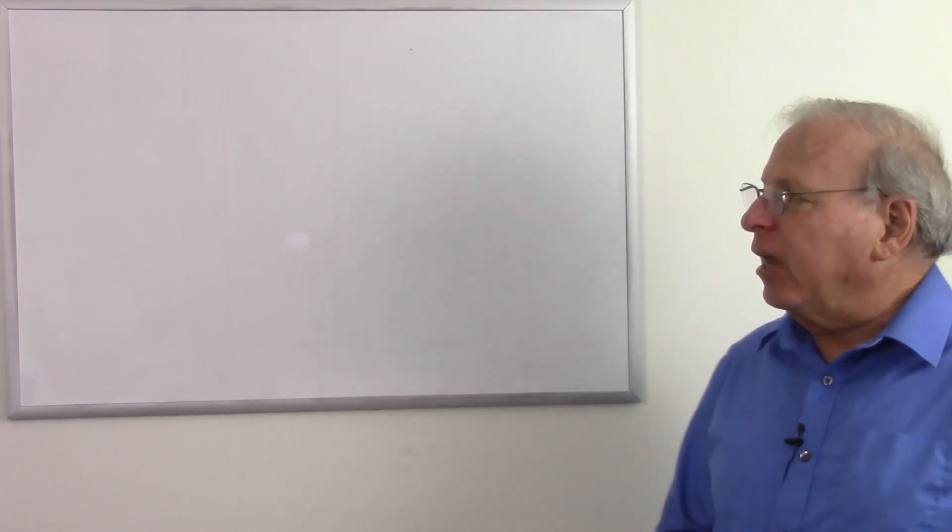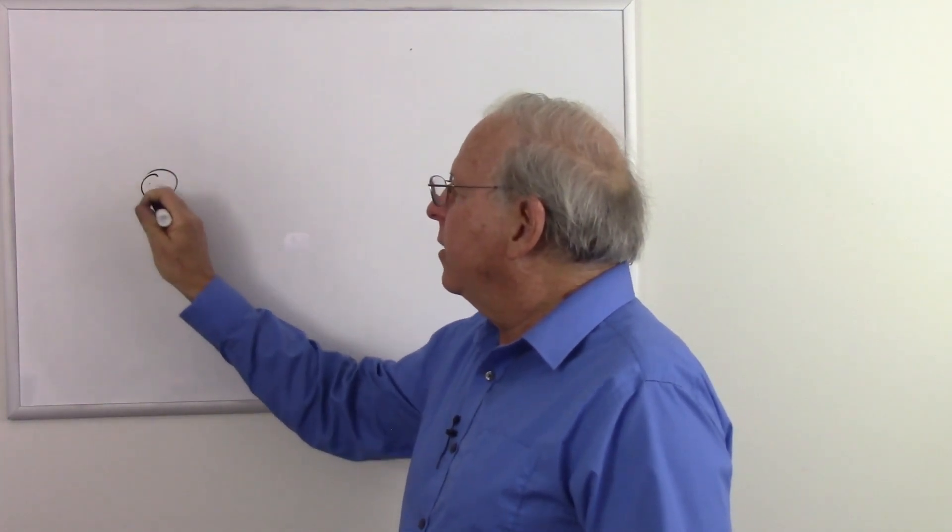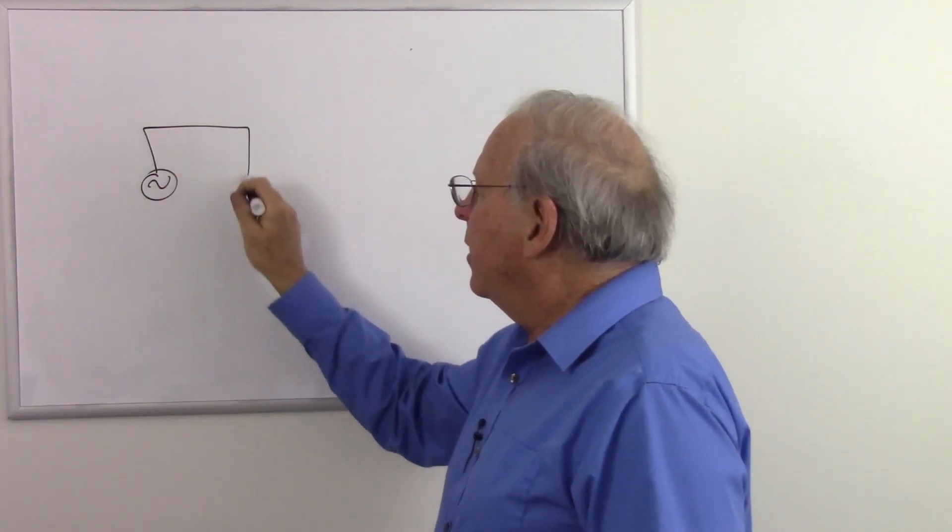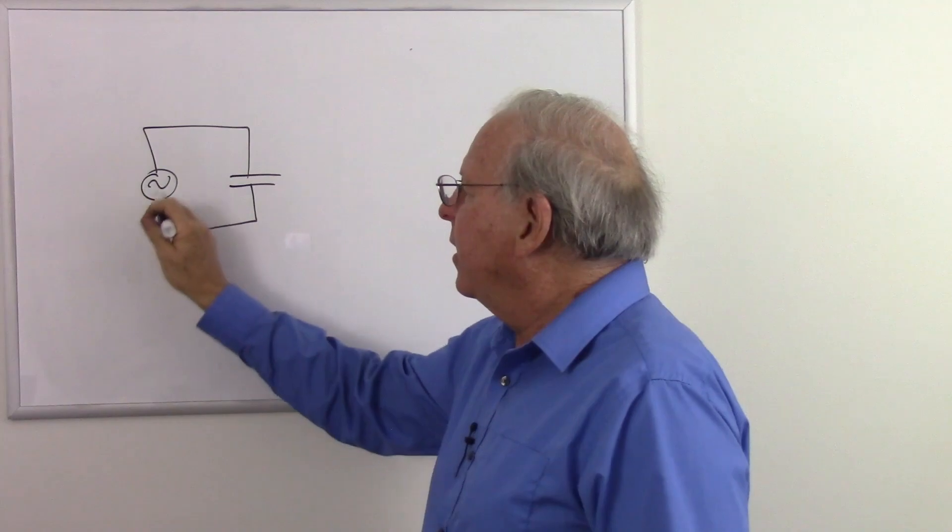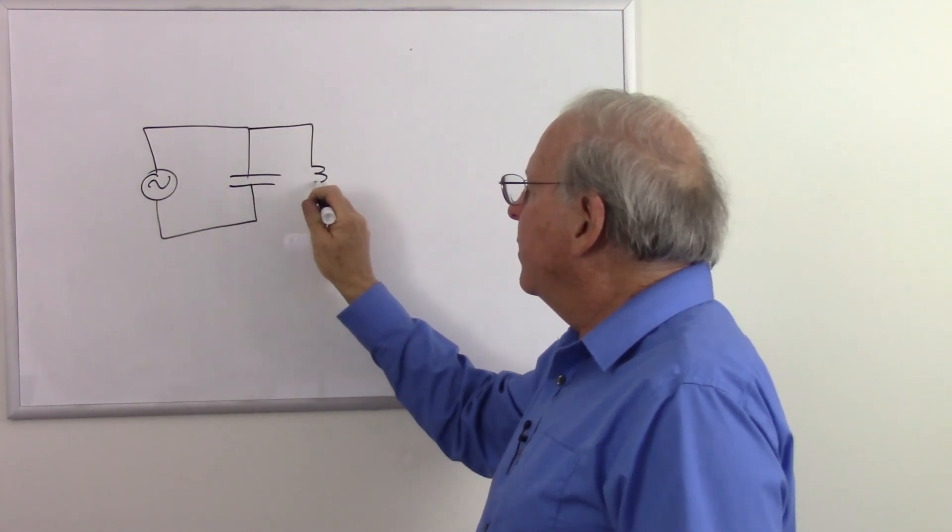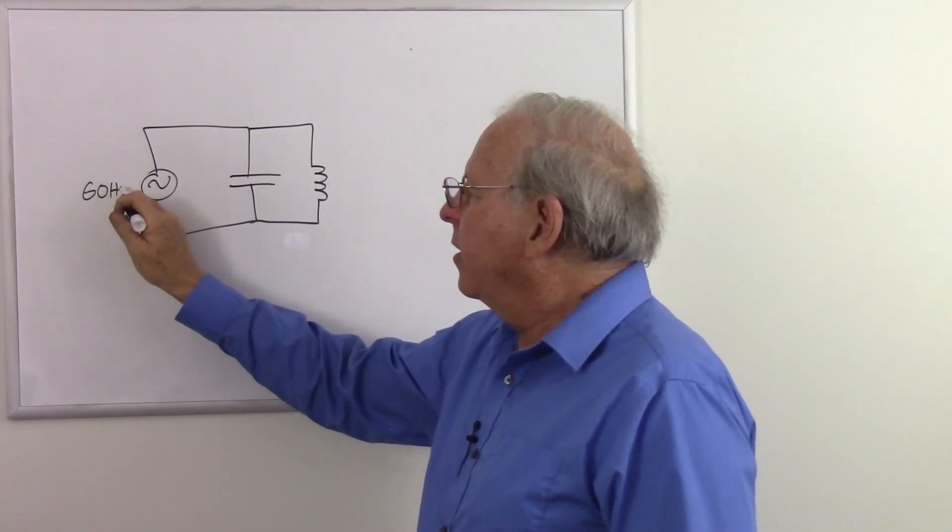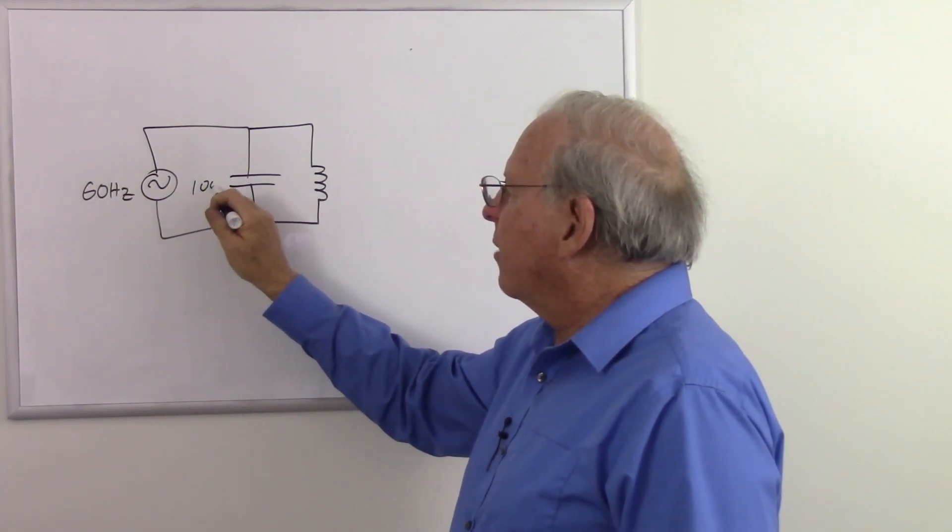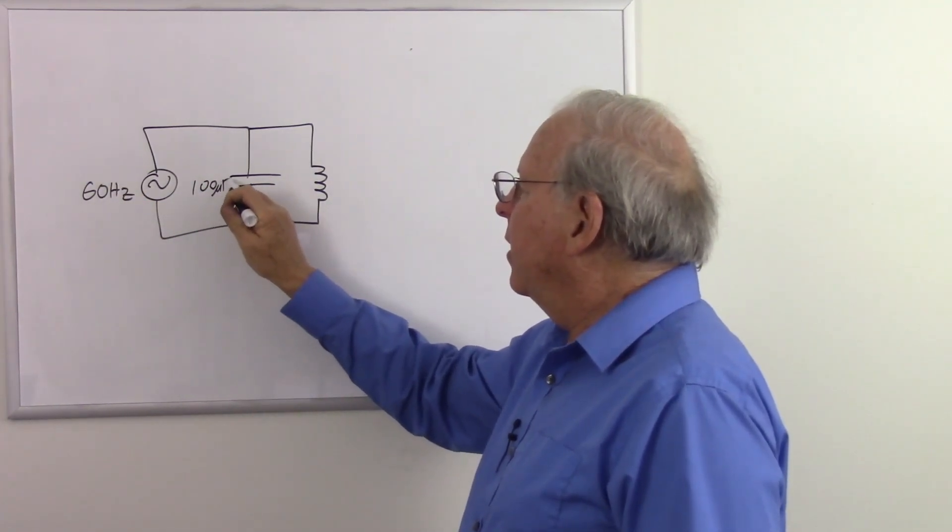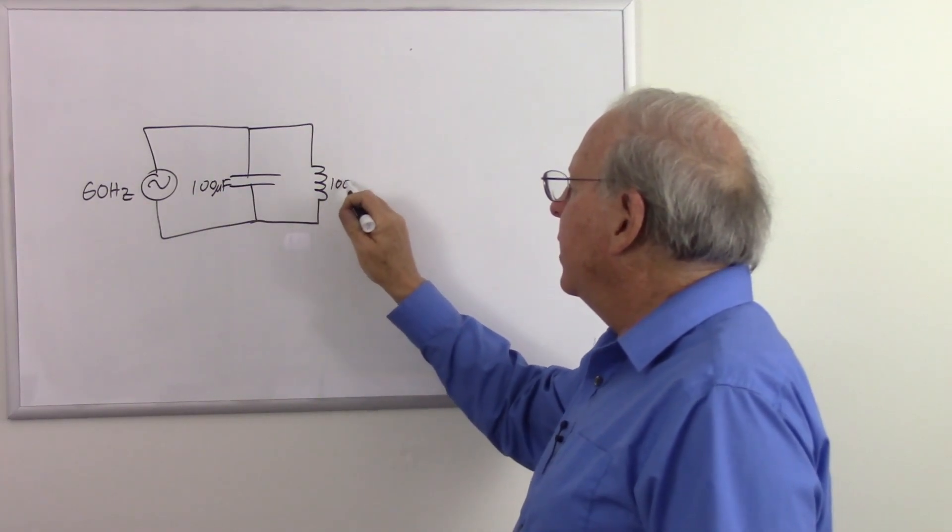In my previous video, I took a simple circuit. Here's a generator, a capacitor, and an inductor. Made this 60 Hz, 100 microfarads, and 100 mH, and we calculated what the total impedance of this circuit was using the standard product over sum.